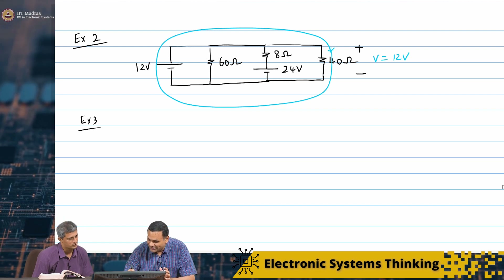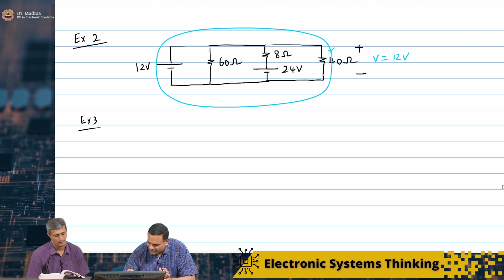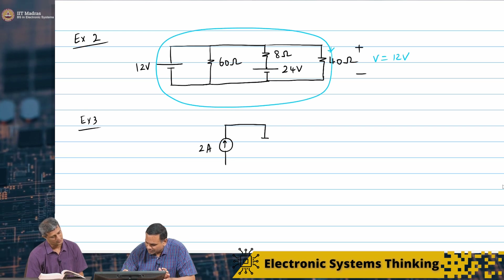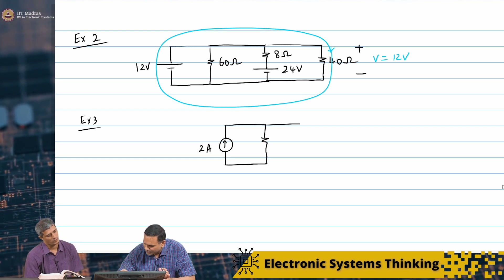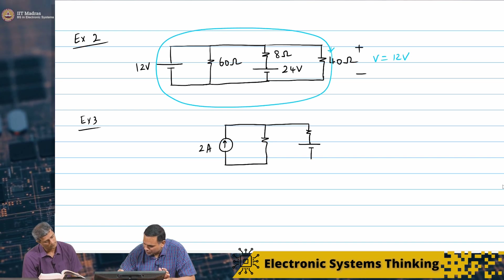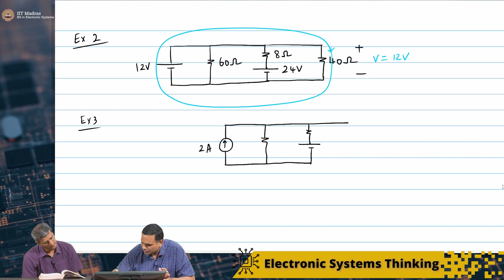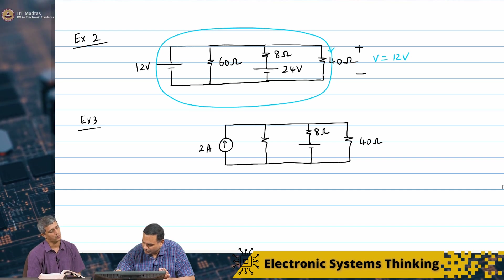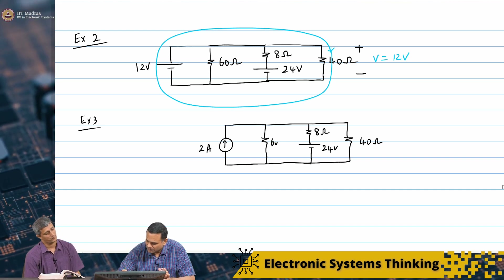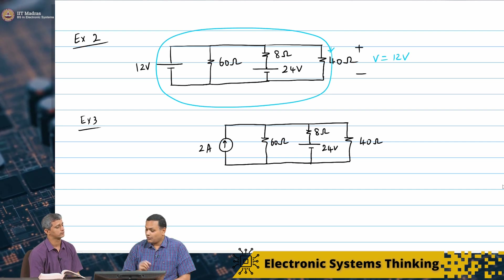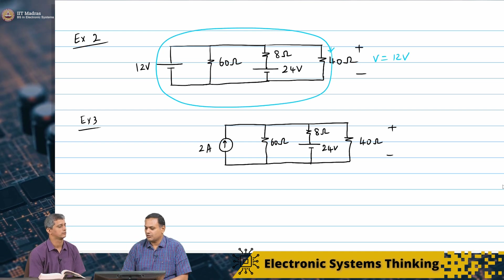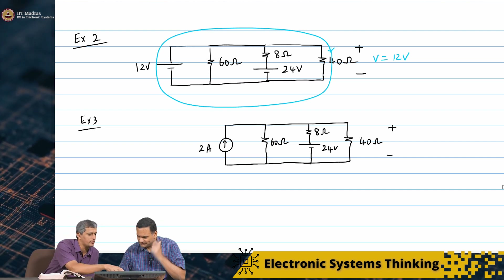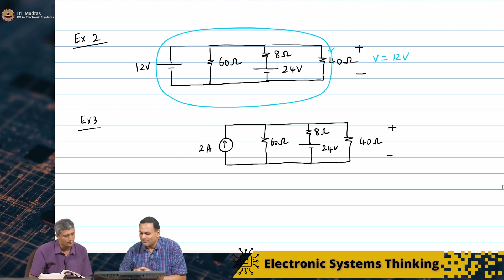What we want to do: replace the 12 ampere current source with a 2 ampere current source, and the rest of the circuit remains the same. What I want to find is the voltage across the 40 ohm resistor. This is not straightforward — you cannot say that the 2 amp is flowing through the 40 ohm, because there are multiple currents coming.